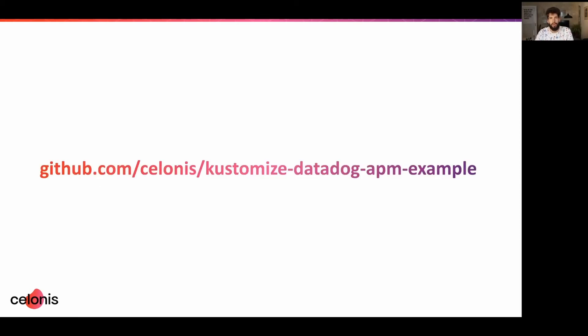To see the full code for this, including some additional helpful tips, head over to the example repository at github.com/salonis/kustomize-datadog-apm-example. I hope this talk gave you an idea of how you can simplify configuring APM for Java services using Kustomize. Of course, this approach can also be applied in other situations where you want to centrally manage configuration. Thanks a lot for watching.